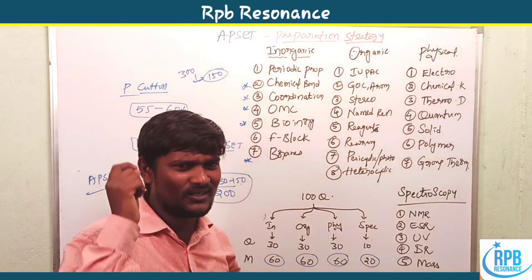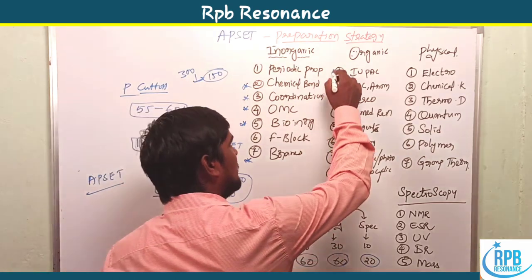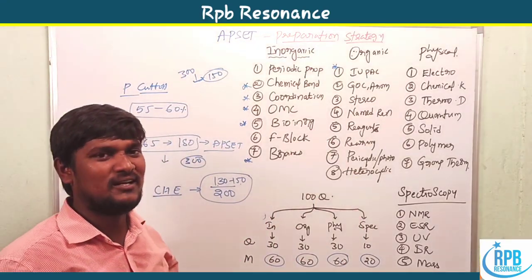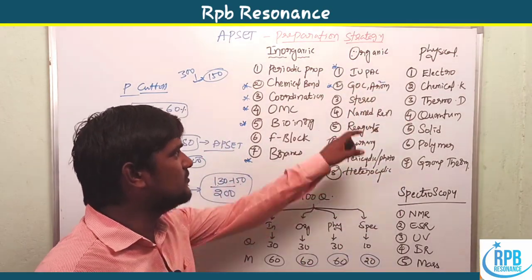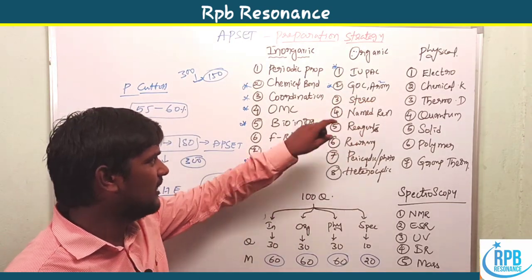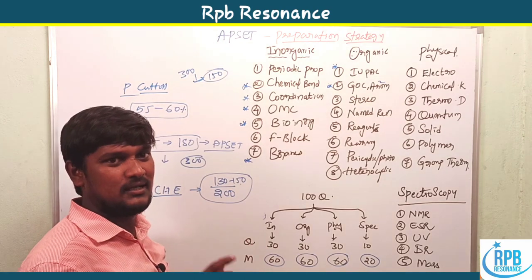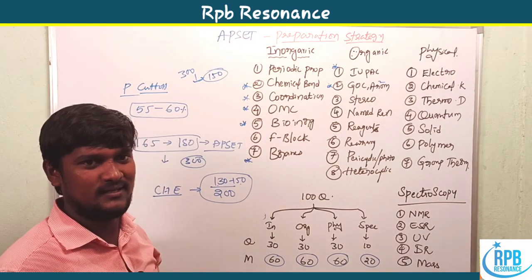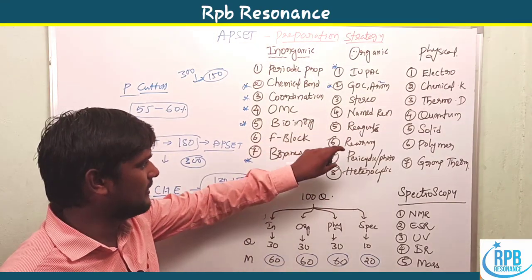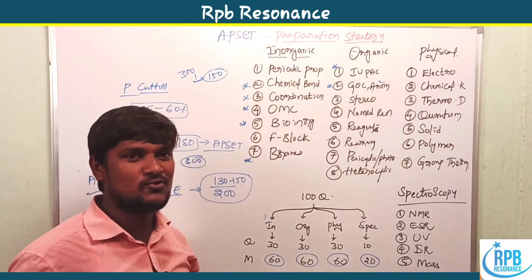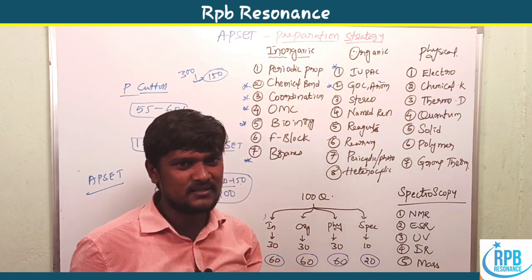In organic chemistry, each paper has one or two IUPAC nomenclature questions — thorough knowledge of IUPAC can earn two to four marks. GOC (general organic chemistry) covering carbocations, carbanions, and free radicals, and aromaticity also carry about two questions each. Stereochemistry and name reactions with reagents are heavily weighted. Rearrangements and name reactions overlap significantly. Pericyclic reactions and heterocyclic compounds are also high-weightage topics.